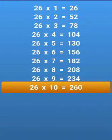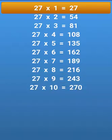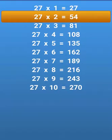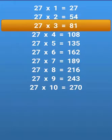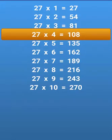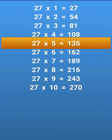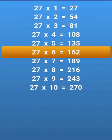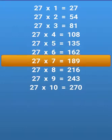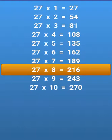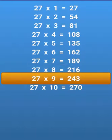26 times 10 equals 260, 27 times 1 equals 27, 27 times 2 equals 54, 27 times 3 equals 81, 27 times 4 equals 108, 27 times 5 equals 135, 27 times 6 equals 162, 27 times 7 equals 189, 27 times 8 equals 216, 27 times 9 equals 243.